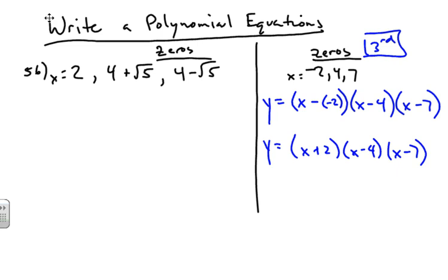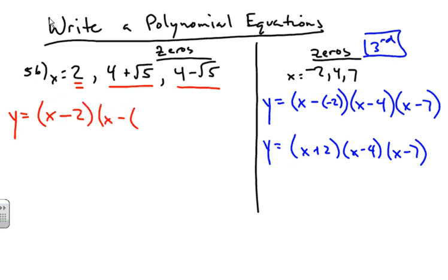Now for more complex problems where the zeros are not always rational — we have 2, and then 4 plus the square root of 5, and 4 minus the square root of 5, which are a conjugate pair of irrational values. We do the same thing: y equals x minus 2, times x minus the quantity (4 plus the square root of 5), times x minus the quantity (4 minus the square root of 5).